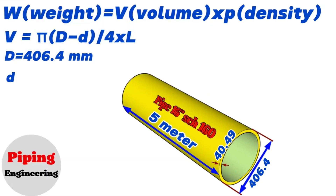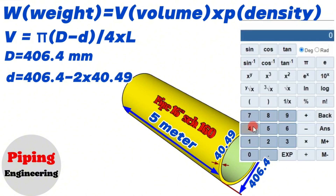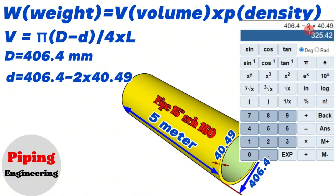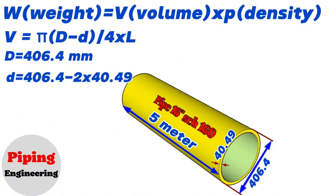Then the inside diameter equals the outside diameter 406.4 minus 2 times the wall thickness 40.49. Using the calculator, we find that 406.4 minus 2 times 40.49 equals approximately 325. So we calculated and found that the inside diameter of the 16-inch schedule 160 pipe in our example equals 325 millimeters.